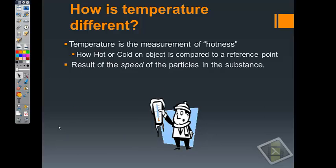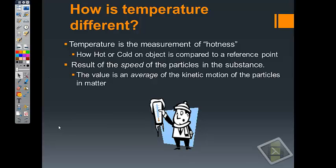But whatever scale we use, we're basing it on one of those particular reference points. And again, temperature is a result of the speed of the particles in those substances. And the value that we measure, whether it's on a thermometer or a temperature probe or something of that sort, is an average of the kinetic motion of those particles. That means that some of the particles are moving faster, other particles are moving slower. So the value that we're getting is an average of those fast and slow particles.